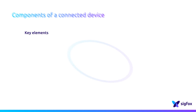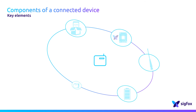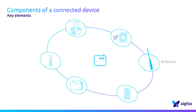What's in a connected device? What are its different components? Of course we have the antenna, which is in charge of emitting the radio signal by synthesizing electromagnetic waves. Then we have the battery, which provides the power supply to the connected device. Finally, we have the casing that wraps up all the components.